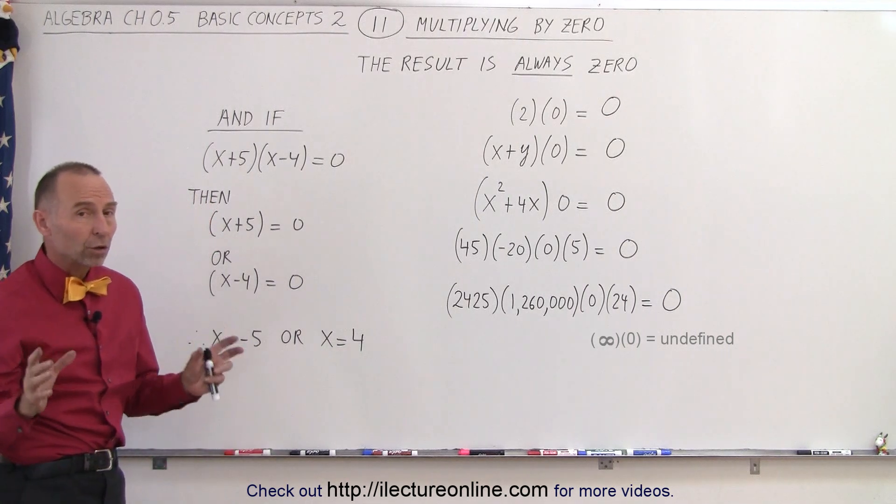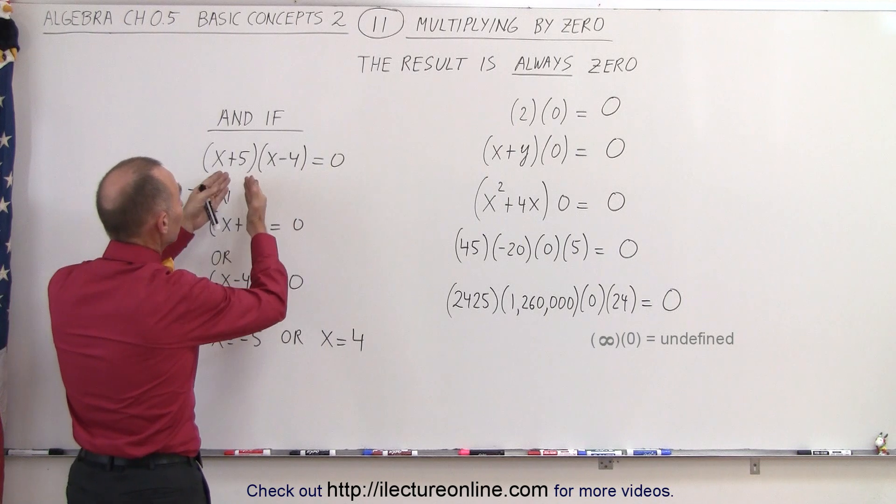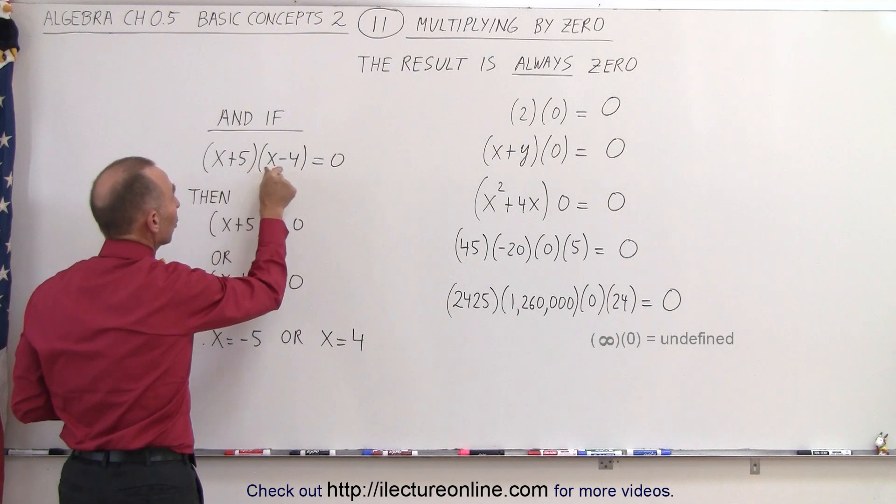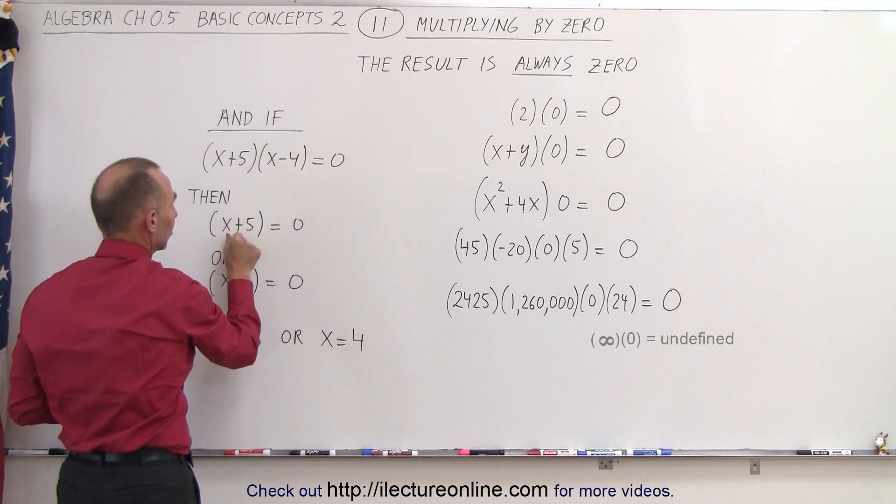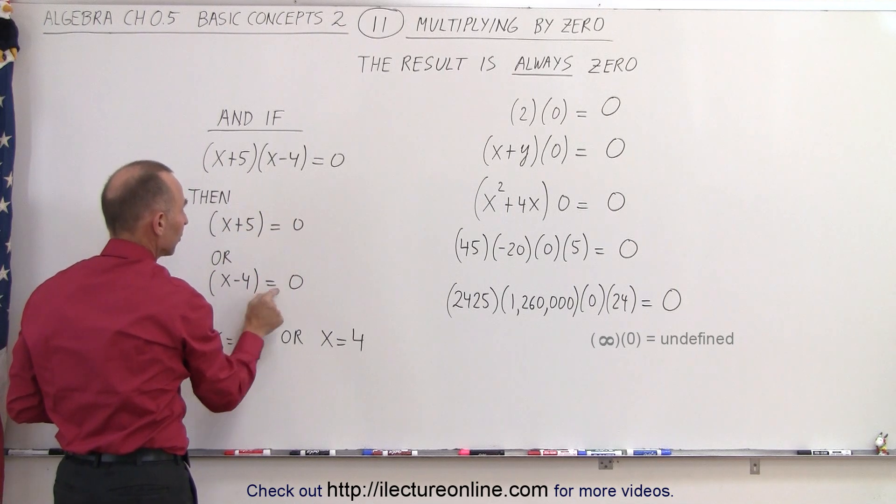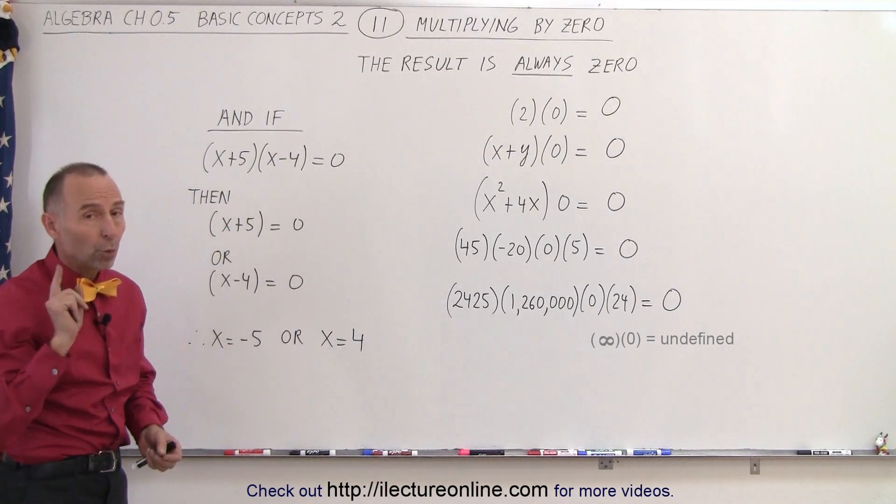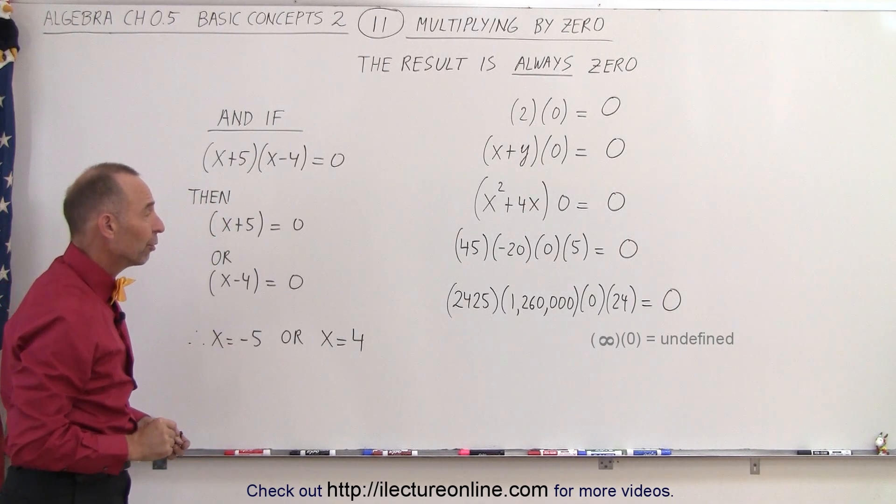So that all comes from the concept that when you multiply two numbers together and the result is zero, one number must equal zero, or the other number must equal zero. Now, x plus 5 or x minus 4 must equal zero, which therefore, we can conclude that x must be negative 5, or x must be equal to 4.